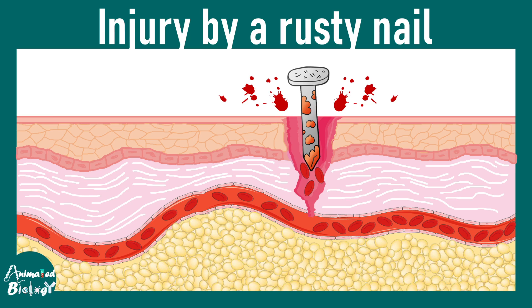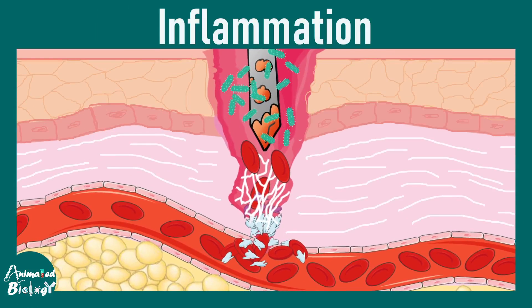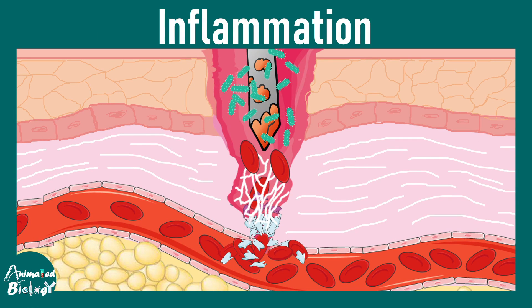Imagine a scenario where you pricked your toe with a rusty nail, causing a small injury at that site with bacteria coming along with it. Blood vessels just underneath the skin would be pricked and bleeding would occur. Eventually platelet plugs would form to prevent the bleeding, and fibrin meshwork would ensure the bleeding is stopped, but several bacteria have now invaded the site.